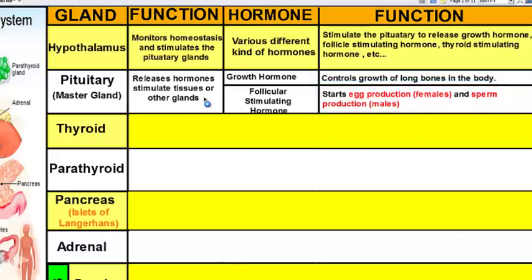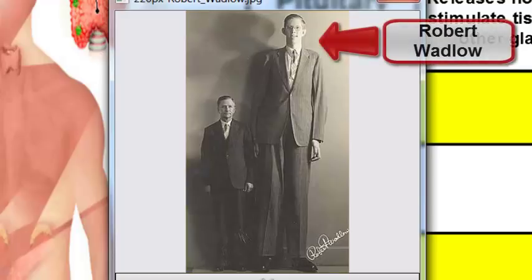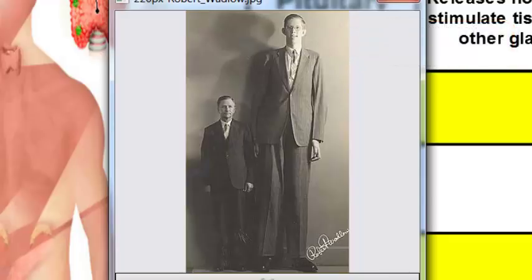We would not have our gametes — the technical term for sex cells — if we didn't have follicle-stimulating hormone. Sometimes glands go out of whack and we get endocrine system disorders. One example is gigantism, a disorder of the pituitary gland. Robert Wadlow, the world's tallest man ever, grew to 8 feet 11 inches because his brain produced more growth hormone than normal. The height you grow to is determined by how much growth hormone you produce.